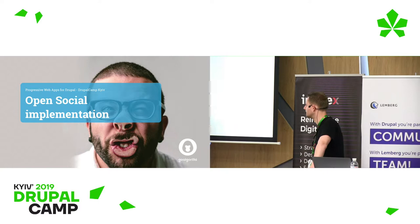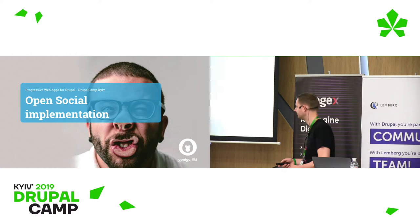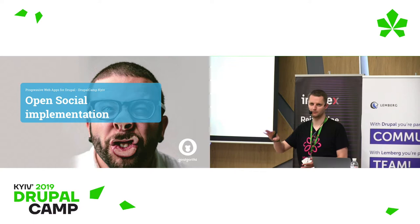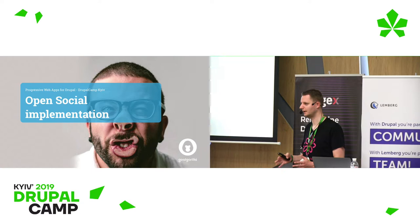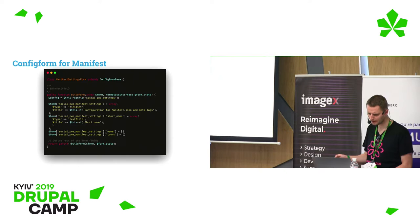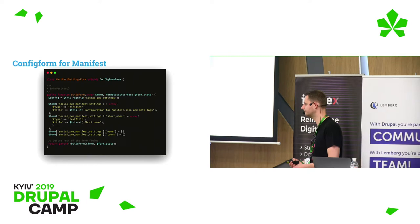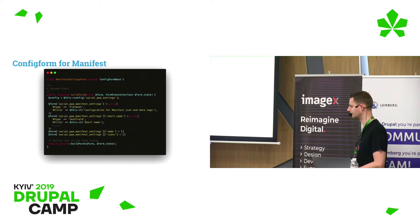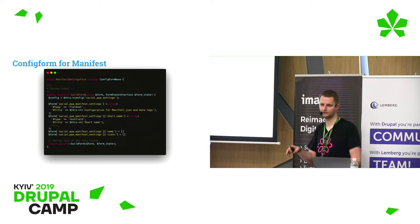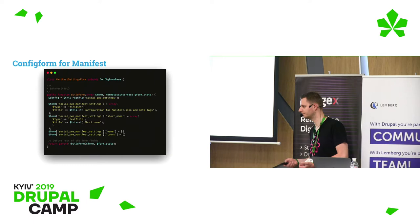Let's check how we did this for OpenSocial. We have a config form for the web app manifest — pretty simple — where you add the name, the short name, some icons, and you can select colors. What will be the background color when you click on the app before the website pages are loaded? They'll see this color, maybe a logo. This is just a config form for that.